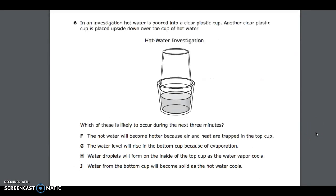Number 6. In an investigation, hot water is poured into a clear plastic cup. Another clear plastic cup is placed upside down over the cup of hot water. Hot water investigation. Which of these is likely to occur during the next three minutes? F, the hot water will become hotter because air and heat are trapped in the top cup; G, the water level will rise in the bottom cup because of evaporation; H, water droplets will form on the inside of the top cup as the water vapor cools; J, water from the bottom cup will become solid as the hot water cools.